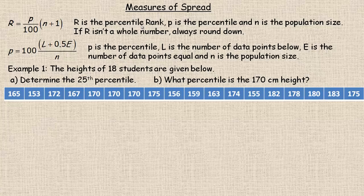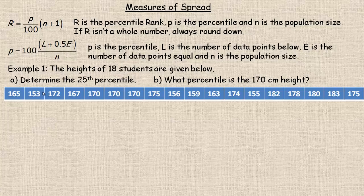R stands for, or is called, the percentile rank. P is the percentile — so whether it's the 25th percentile or 80th percentile — and N is the population size. It says if R is a whole number, always round down, and I'll talk about that in the example.